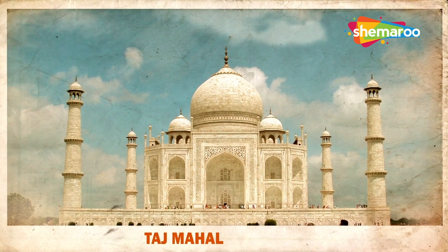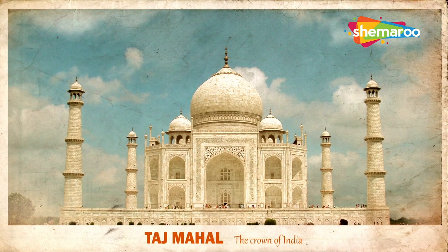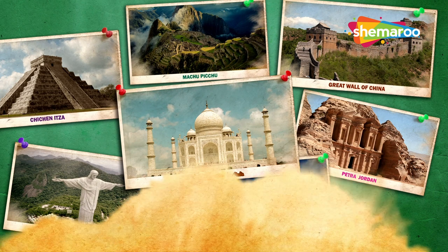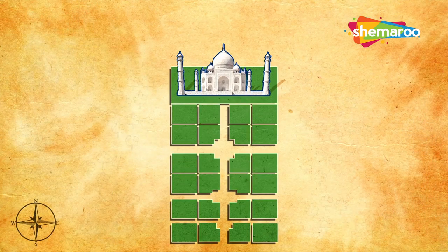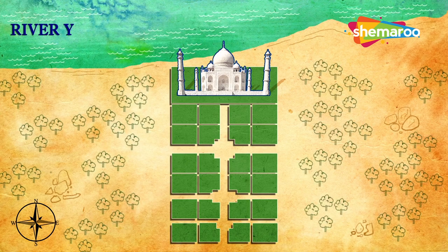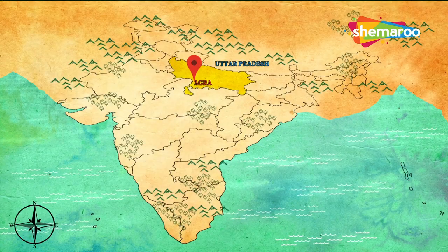The aptly named Taj Mahal is not only the crown of India but also one of the new seven wonders of the world. It is spread over 42 acres on the southern bank of the river Yamuna near Agra in Uttar Pradesh, India.